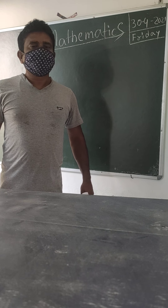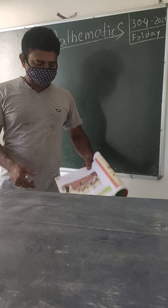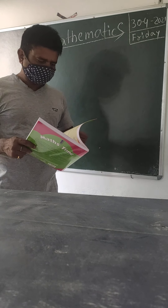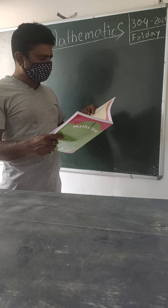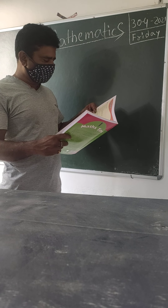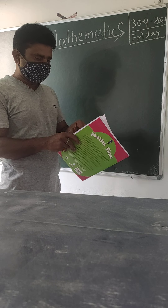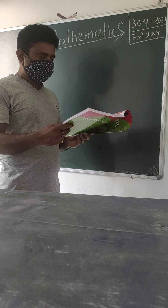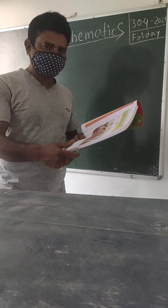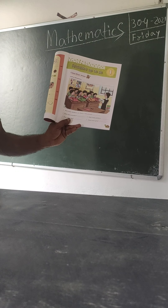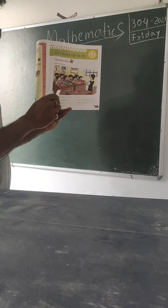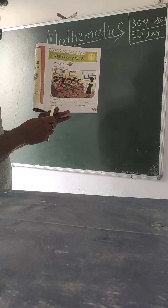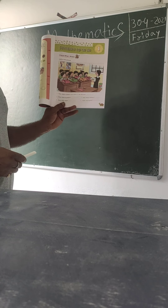Let us start with Chapter 1 of mathematics. In the first chapter we will see numbers up to 10, and after that we will check what I know. At the first page it has already been given — look at the picture. From here we will have to count and write the numbers as per the questions given.